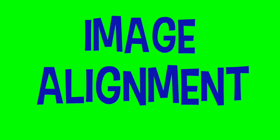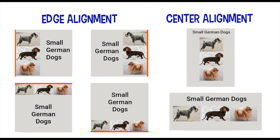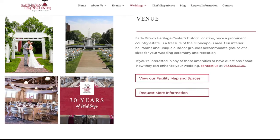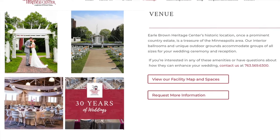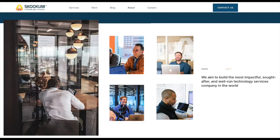Image alignment. You align your images according to size and the relationship they have with other images or with your text. There are two basic types of alignment. Edge alignment means your image can line up with the left edge or the right edge, the top of the page or the bottom of the page. Examples include Earl Brown Heritage Center, where all the photos are aligned on the left, and Sukum, a global logic company, also aligned to the left.